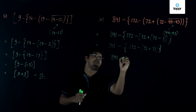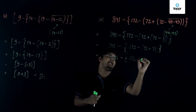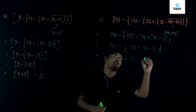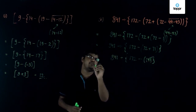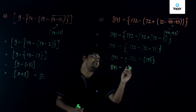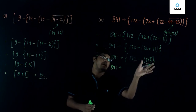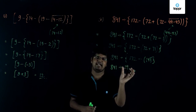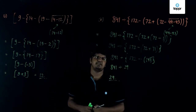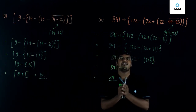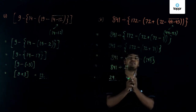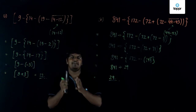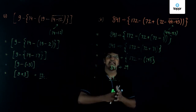Continuing, we get 841 divided by [172 minus {72 plus 71}]. Now 72 plus 71 gives us 143. Then 172 minus 143 gives us 29. So we are left with 841 divided by 29, and upon division we get 29 as the result. You can see the use of brackets has made this question quite easy and easier to understand, as we know which operation to perform first. The only point of using brackets is to make our way of understanding the question easier.